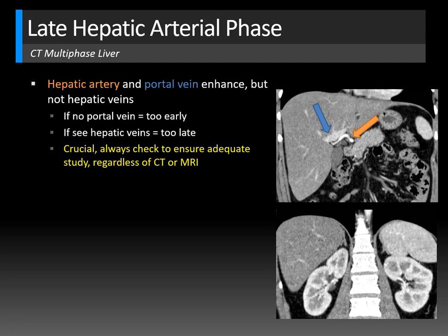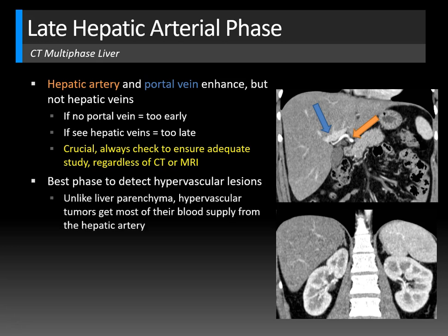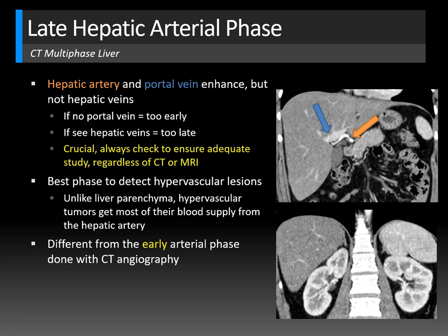It's crucial to always check this on any multi-phase liver study to ensure you have an adequate late hepatic arterial phase, whether CT or MRI. The order of enhancement is normally hepatic artery, then portal vein, then hepatic veins. This late hepatic arterial phase — which you can think of as an arterial-portal phase — is the best phase to detect hypervascular lesions, since hypervascular tumors get most of their blood supply from the hepatic artery. The early arterial phase done with CT angiography is different; even though it seems counterintuitive, it's often too early to pick up hypervascular liver lesions.